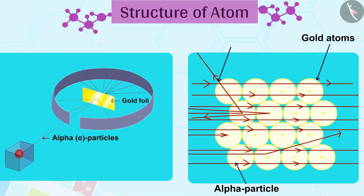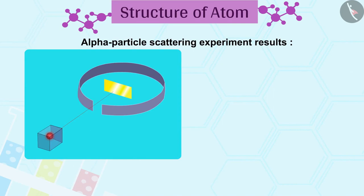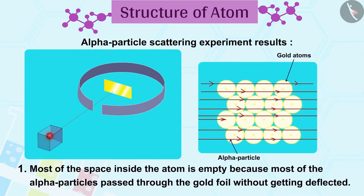Rutherford derived the following results based on an alpha particle scattering experiment. 1. Most of the space inside the atom is empty because most of the alpha particles passed through the gold foil without getting deflected.